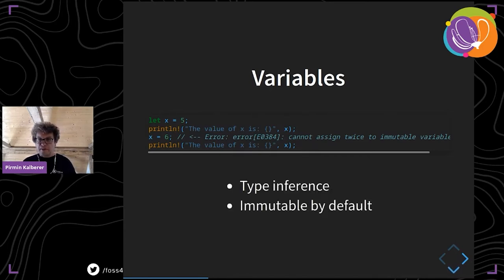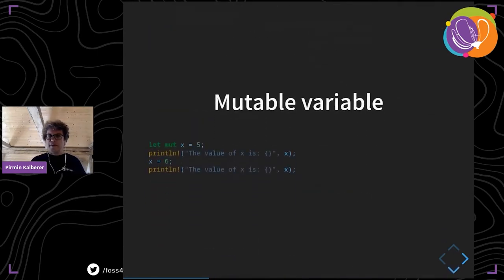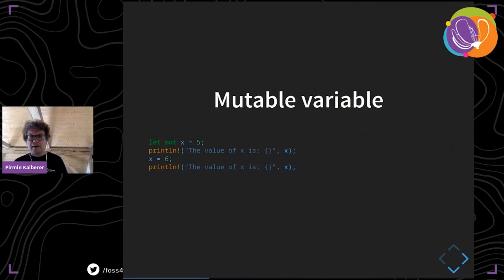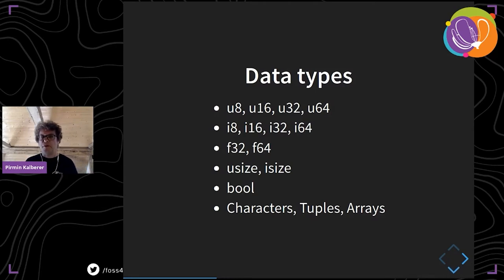You'll also see an error on line three: you can't assign another value to x because variables are immutable by default. To fix that, if you want a mutable variable, you write 'let mut', and then you can assign other values as well.